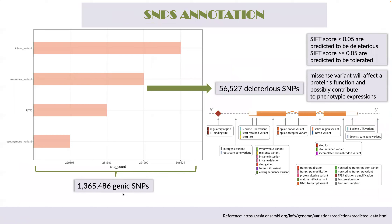For the 1.3 million genic SNPs, we categorised them into four SNP effect types: intron variant, missense variant, UTR, and synonymous variant. For the SNPs in the missense variant category, we further analysed them for deleteriousness using the SIFT tool. In SIFT, an SNP is considered deleterious when the SIFT score is less than 0.05, while a score greater than 0.05 means the SNP is predicted to be tolerated.